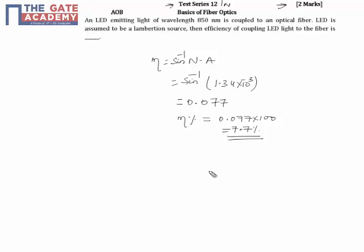The question is a fill-in-the-blank type. An LED emitting light of wavelength 850 nanometer is coupled to an optical fiber. The LED is assumed to be a Lambertian source.